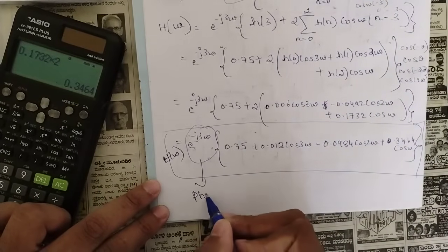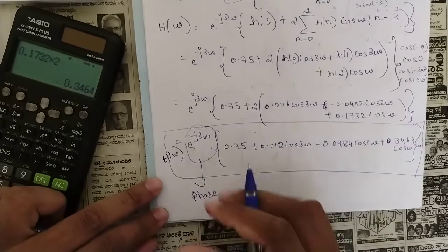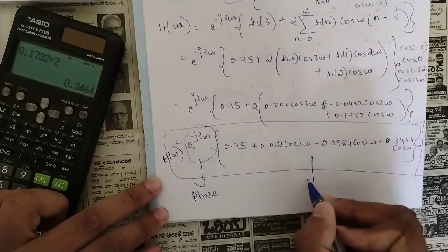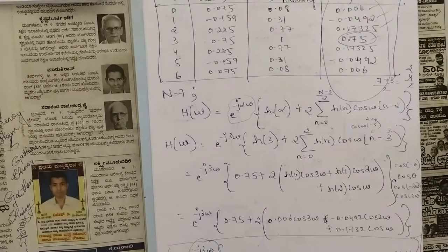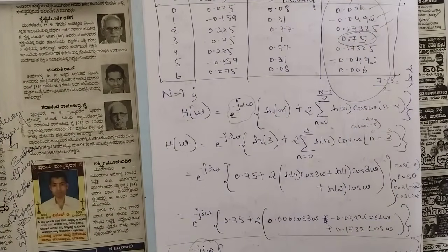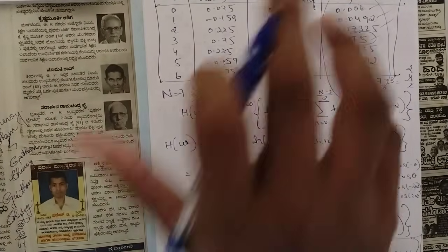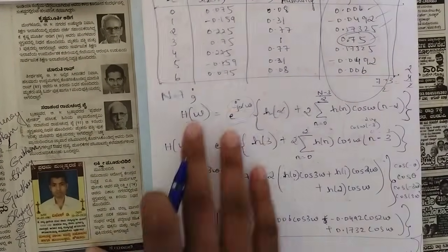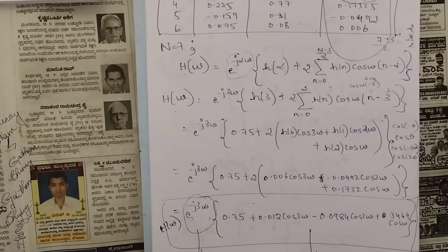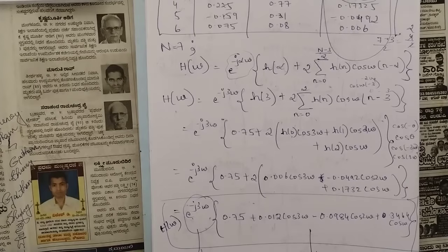In this result, the term e^(−j3ω) is the phase part, and the bracketed expression [0.75 + 0.012 cos(3ω) − 0.0984 cos(2ω) + 0.3464 cos(ω)] is the magnitude part. This complete problem — covering desired frequency response, filter coefficients, window application, and actual frequency response — is the full 10-mark FIR filter design problem. Thank you, and see you in the next session.